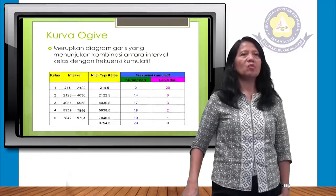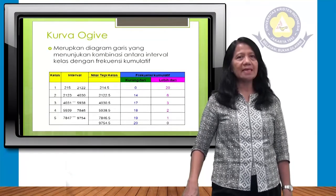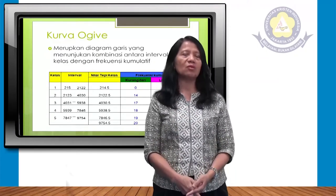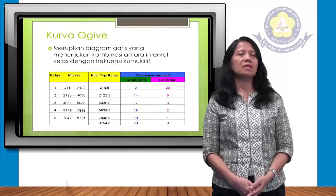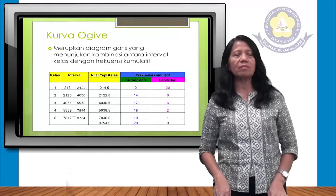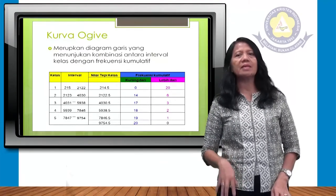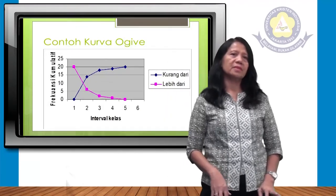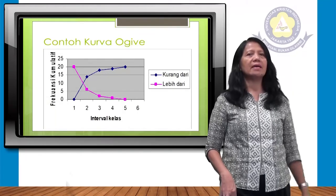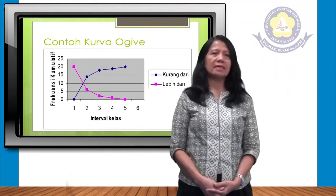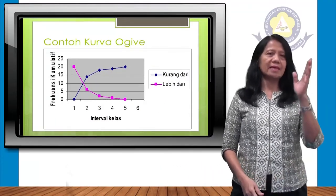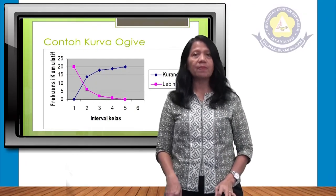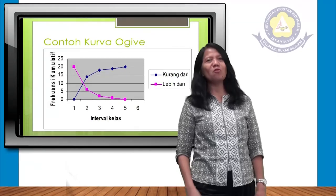Kurva ogif merupakan diagram garis yang menunjukkan kombinasi antara interval kelas dengan frekuensi kumulatif. Tabel datanya sudah tersedia; kita tinggal membuat kurva ogif. Kelas 1: interval 215–2.122, nilai tepi 214,5, frekuensi kumulatif kurang dari 0, lebih dari 20. Pada grafik, yang warna biru adalah kurva kurang dari, yang pink adalah kurva lebih dari.